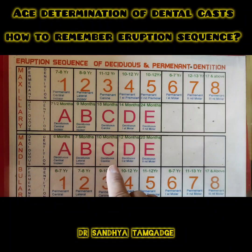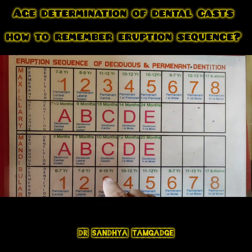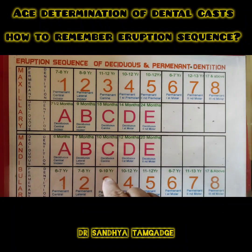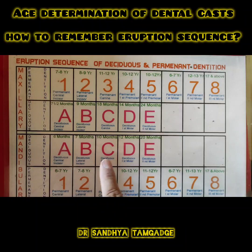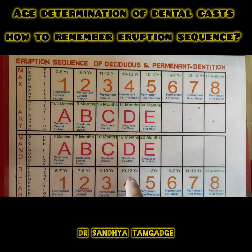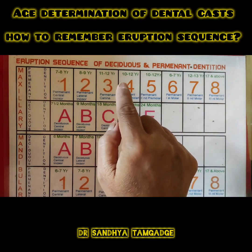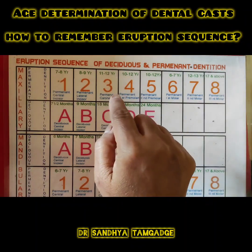The lower canine erupts quite early, at nine to ten years. I mentioned it separately from the premolars because this canine erupts before the premolars, which means the chances of crowding or malocclusion in the mandibular arch are relatively less.